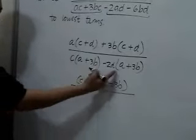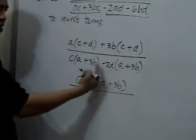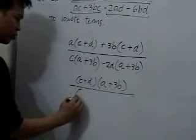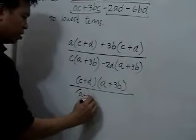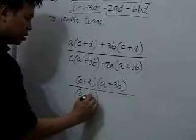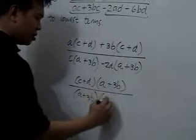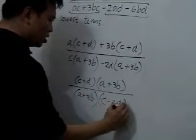If you inspect these terms in the denominator, you will notice that A plus 3B is a common factor. We factor out A plus 3B, leaving us with C in the first term, and negative 2D in the second.